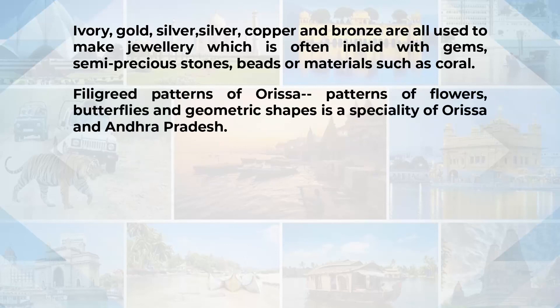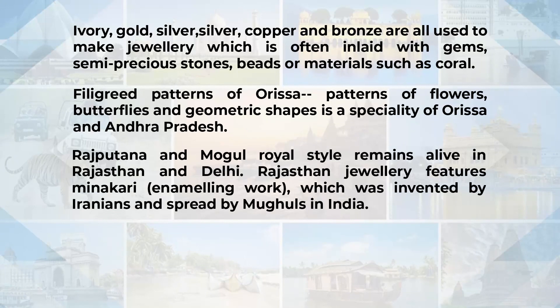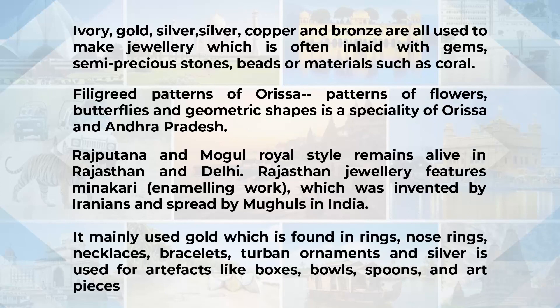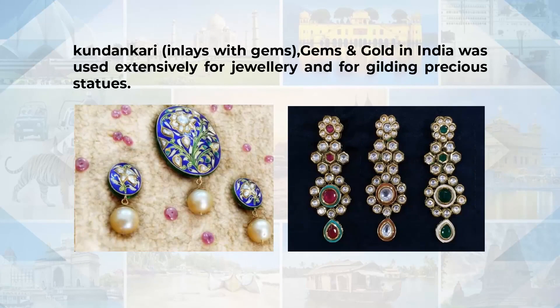The filigree patterns of Odisha are very popular, with flowers, butterflies and geometric shapes as specialities. Rajputana and Mughal royal style remains alive in Rajasthan and Delhi. Rajasthan jewelry features Meenakari, the enameling work invented by Iranians and spread by Mughals in India, mainly using gold, found in rings, nose rings, necklaces, bracelets and turban ornaments. Silver was used for artifacts like boxes, bowls, spoons and art pieces. Kundankari, inlaid with gems, was also very popular all over India.